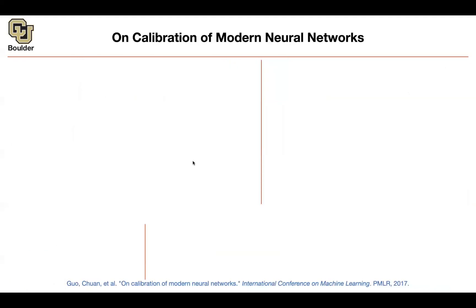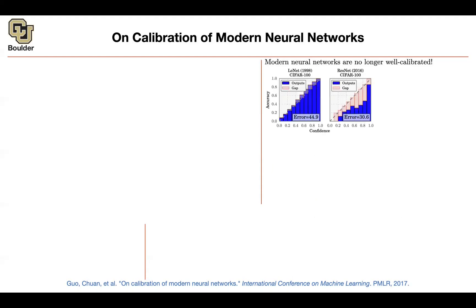So far, the only metric that we have been looking at was the accuracy of our neural networks. There is this question: is your neural network actually calibrated? And I'm going to tell you an exact definition of that. Being calibrated is a good thing. It turns out that modern neural networks these days are no longer well calibrated — they are highly accurate, but they are not calibrated. Here is an indication of that, shown in this figure.